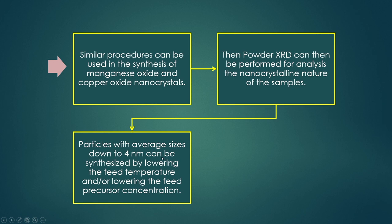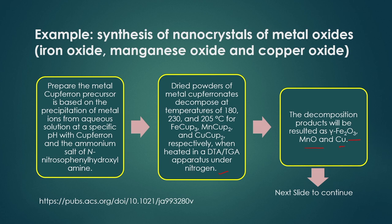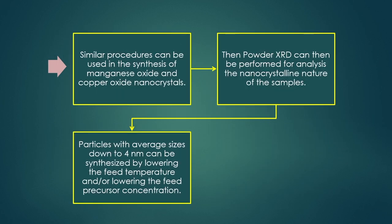Particles with average sizes down to 4 nanometers can be obtained by this method. By lowering the feed temperature and feed precursor concentration, even smaller particles below 4 nm can be achieved. This is the basic way by which thermal decomposition can yield nanocrystals of different oxide materials. We have now understood the methods of thermal decomposition, sol-gel, and microemulsion for producing nanoparticles.